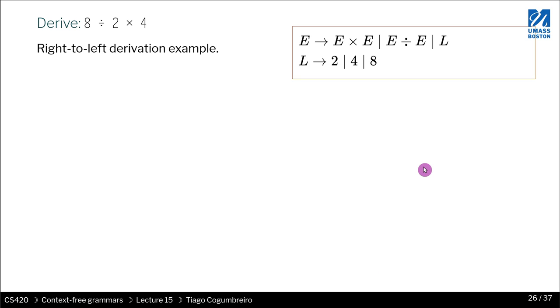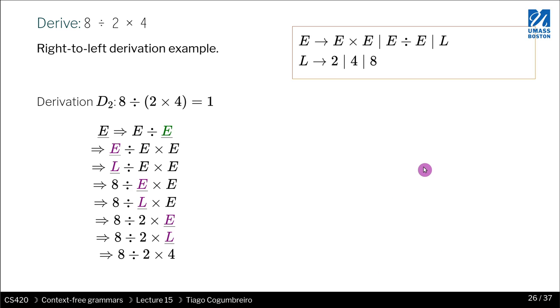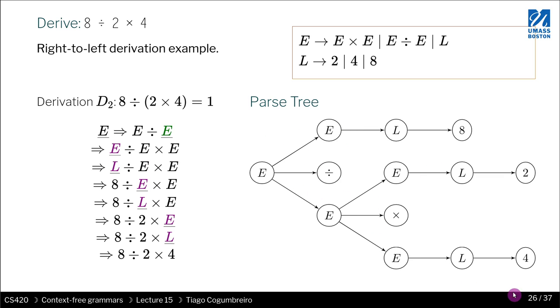But if you actually interpret eight divided by, in parentheses, two multiplied by four, then you would have this other derivation tree, which would give you another structure. And that is a different meaning. The result would be one.